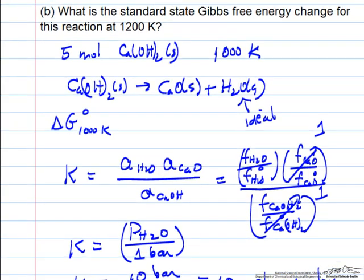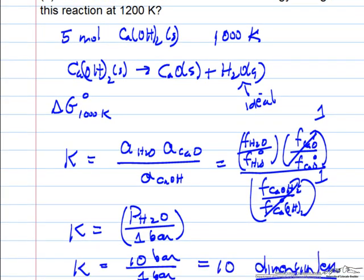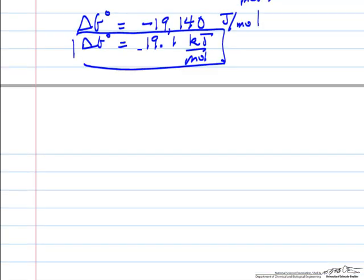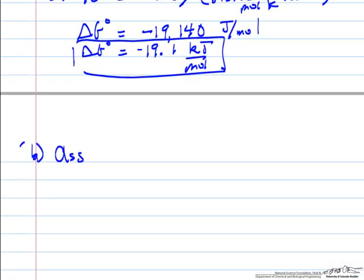The second part says, what's the standard Gibbs free energy change for the reaction at 1200 Kelvin? So for the small temperature change, part B,